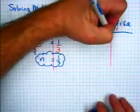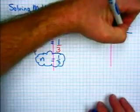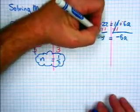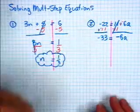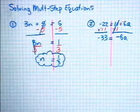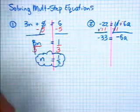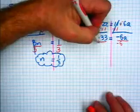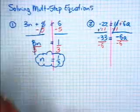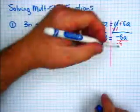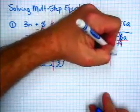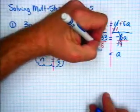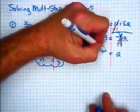This is negative 6a — add the opposite — negative 33. Now in order to get rid of that negative 6 which is multiplied, we divide both sides by negative 6. Those cancel, leaving us with just an a. A negative divided by a negative is a positive, so it's 33 over 6.